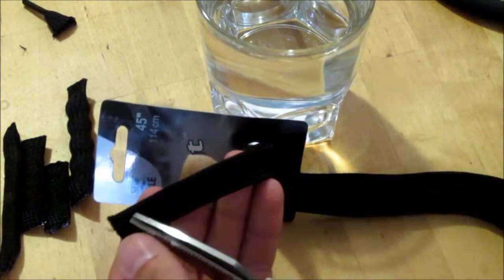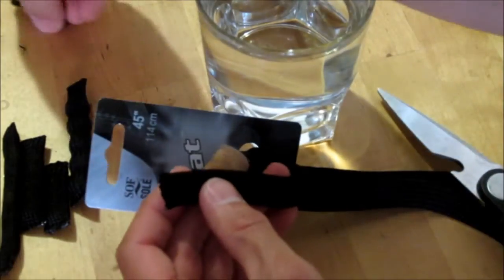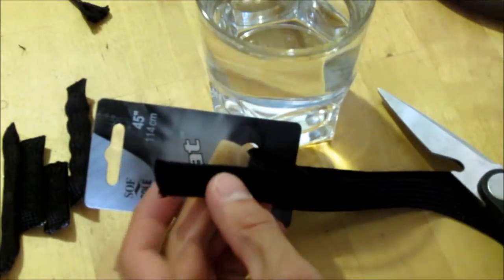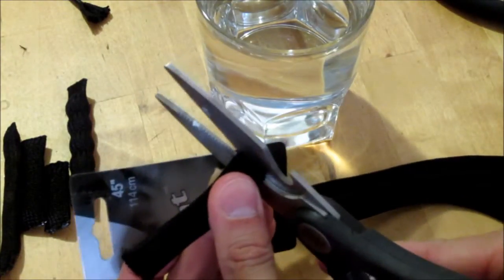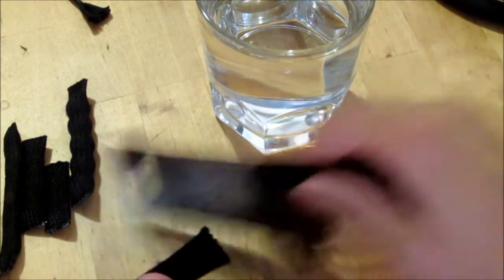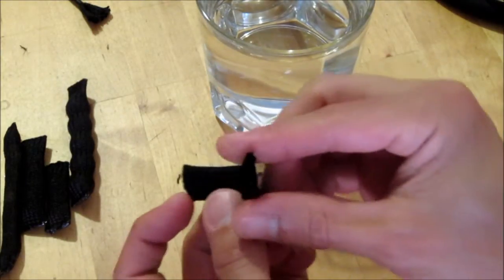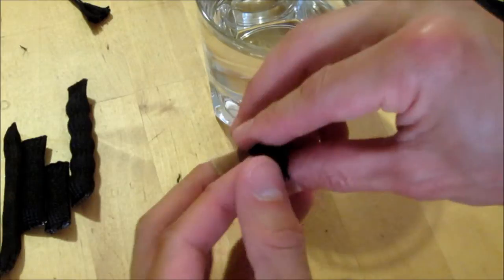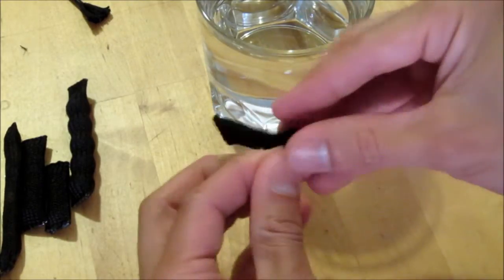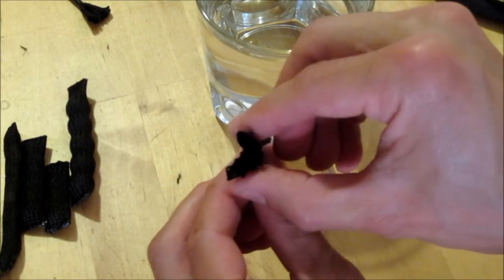You're just going to want to cut off a section of this. You don't need the end, I've already cut that off. Let's see, we'll make a smaller one. Cut it off and what you see is that this stuff is actually hollow. You can actually pry it open on one end. It's a flattened cylinder basically.